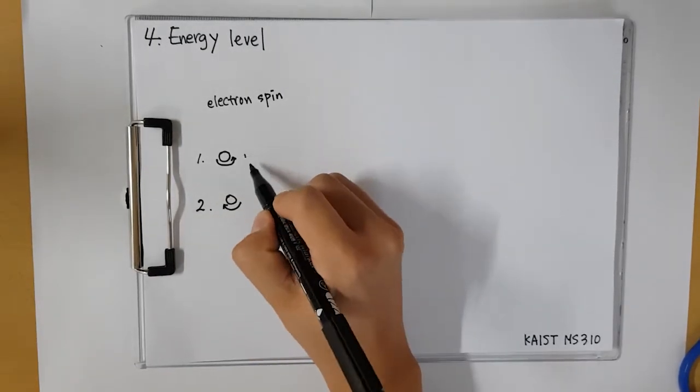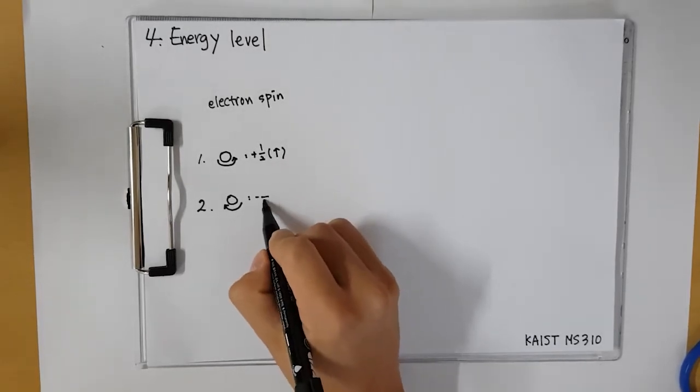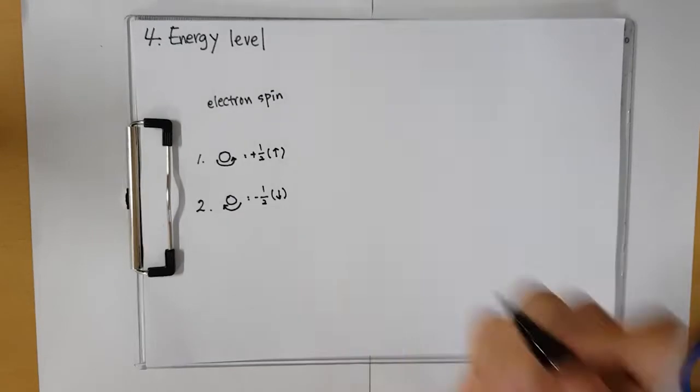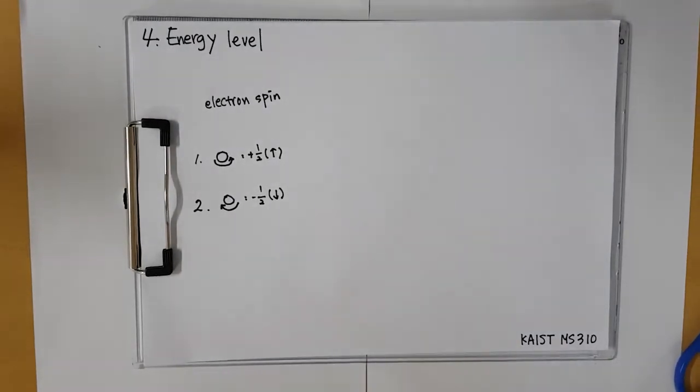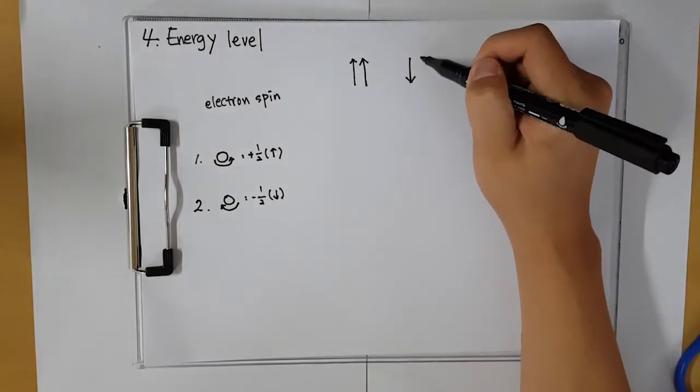If electron spin is counterclockwise, value would be plus half. And if electron spin is clockwise, value would be minus half. Because NV Center has two unpaired electrons, spin combination has four states.